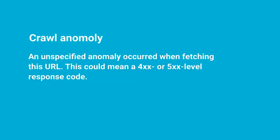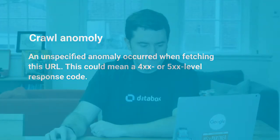One of the more common issues that we run into is this crawl anomaly issue, and the way that Google defines that is: an unspecified anomaly occurred when fetching this URL. This can mean a 400 or 500 level response code. The key word here is unspecified — Google tried crawling a URL on your site and something weird happened, but you didn't actually specify the response code, or at least it couldn't see the response code for one reason or another.